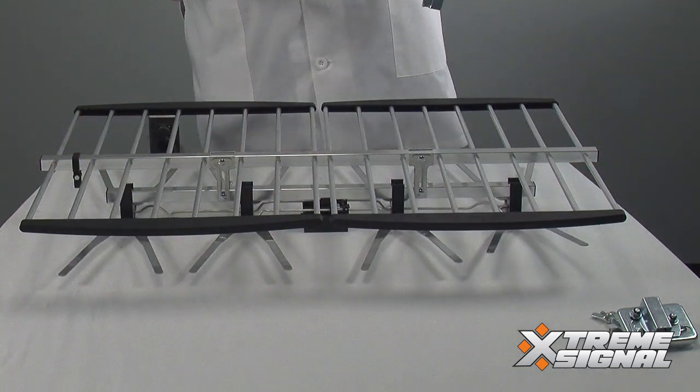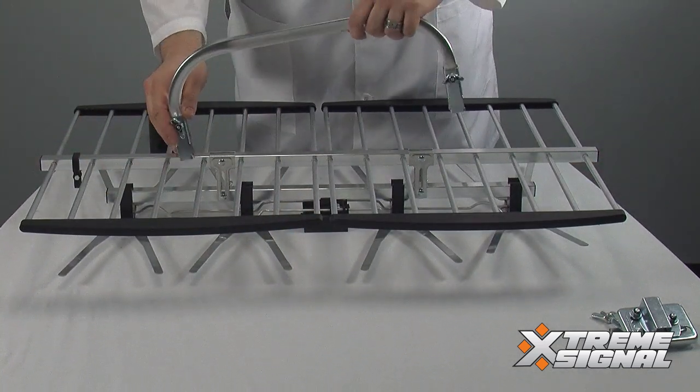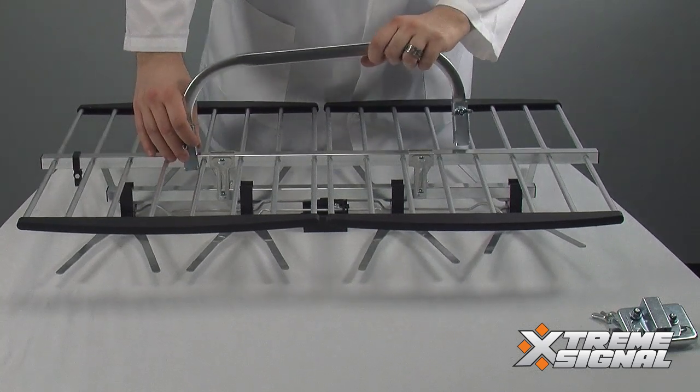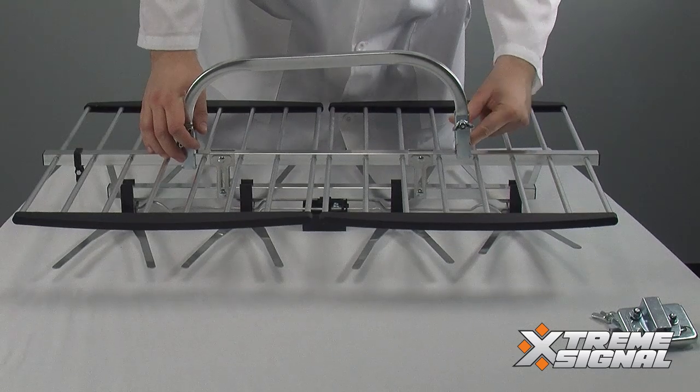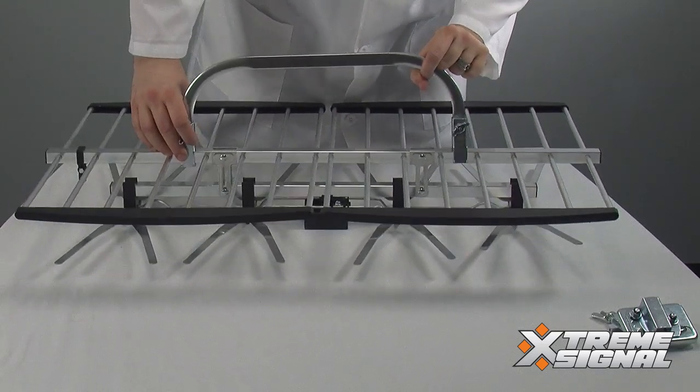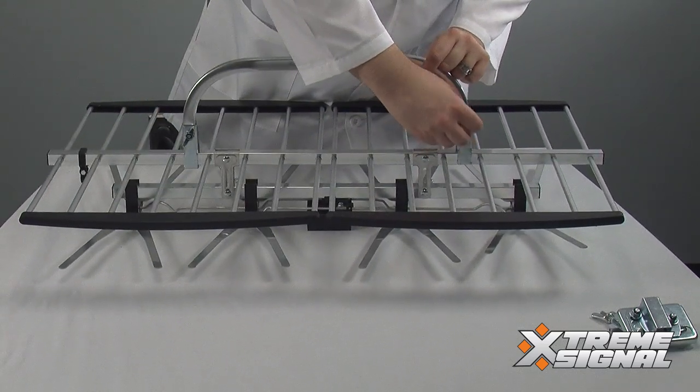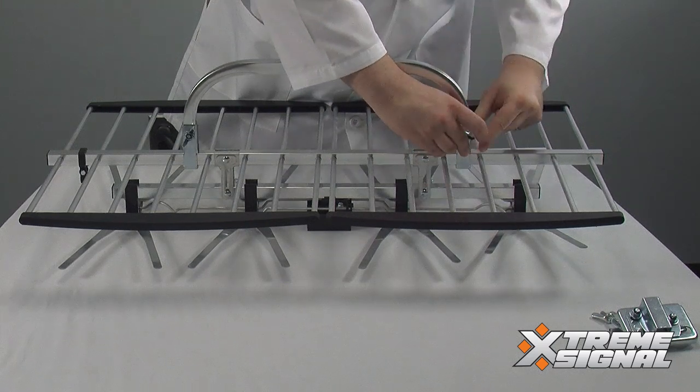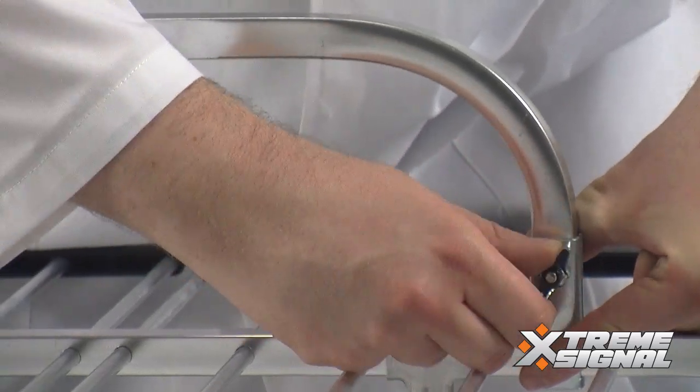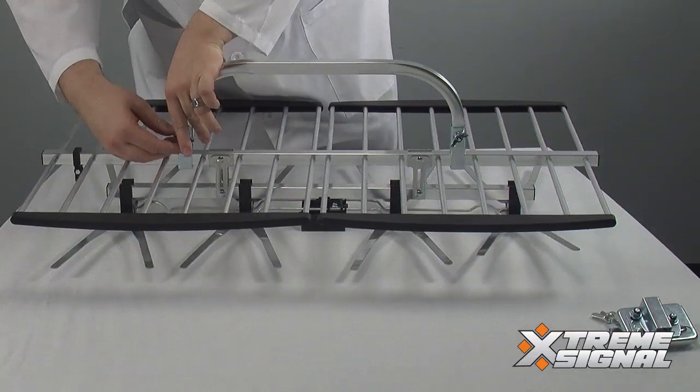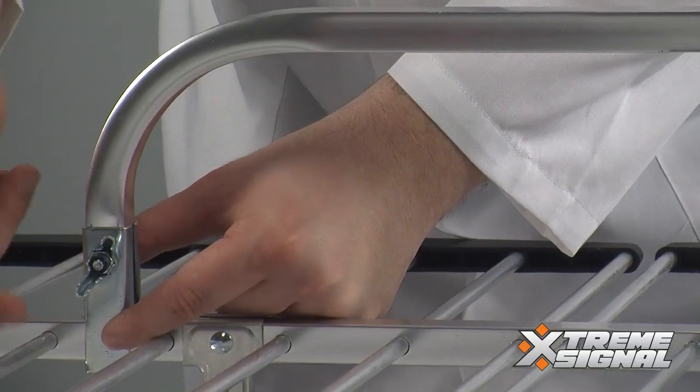Next, we're going to attach the mounting bracket. You want to have this placed about the center and the back of each reflector. Now, you may have to wiggle it a little bit to get the teeth lined up. Once you do, all you've got to do is tighten them back down. And this step is done.